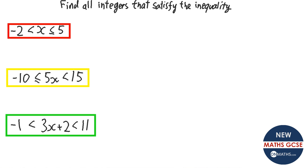This question asks us to write down all the integers that satisfy the inequality. Reading the first one, x is between −2 and 5. It's not equal to −2, so I start from −1: −1, 0, 1, 2, 3, 4. Can it be equal to 5? It has the little line underneath the inequality, so yes — include 5. If it has the line underneath, include that number; if not, leave it out.